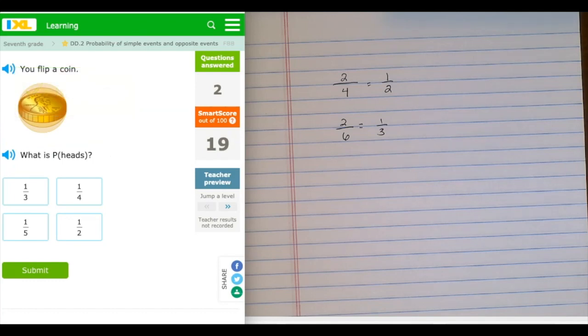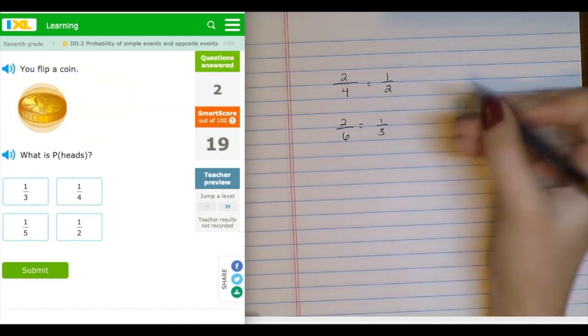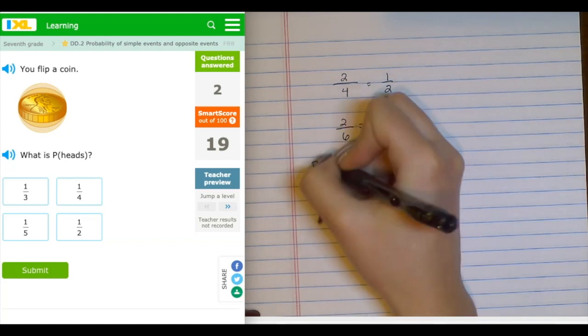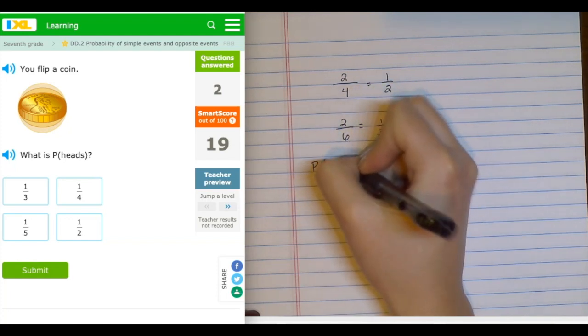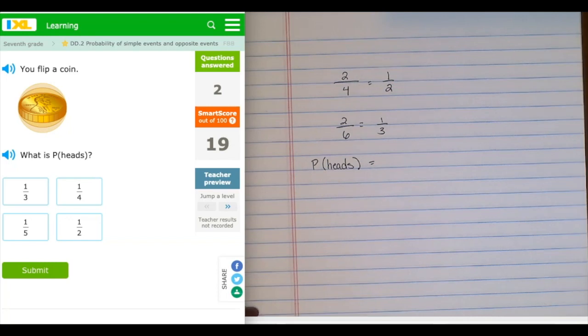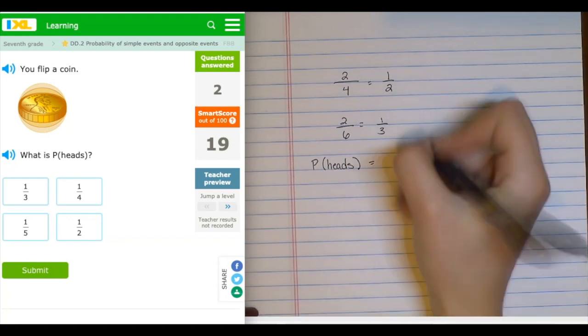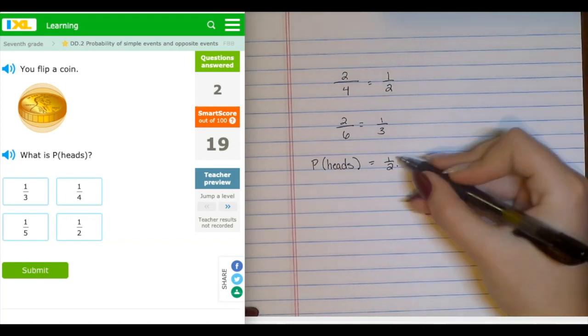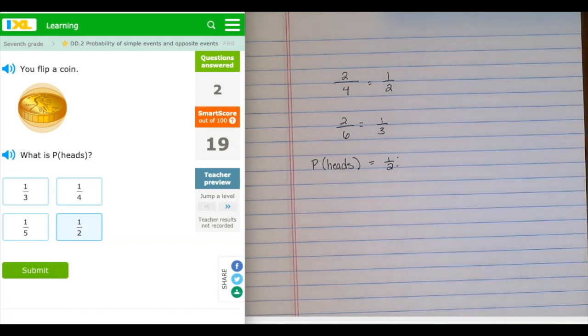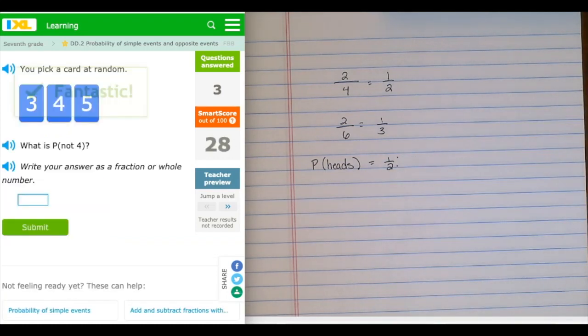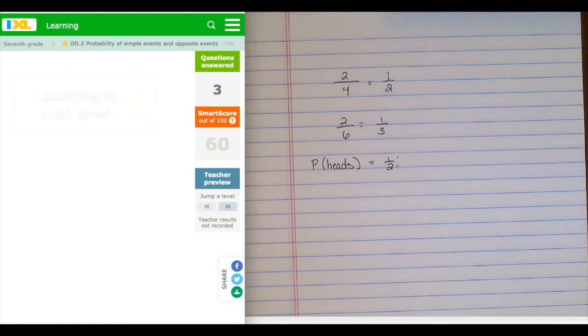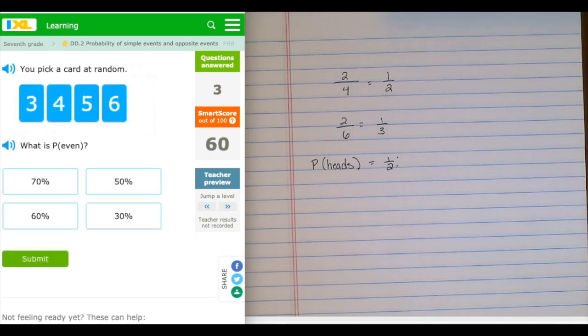What is the probability of landing on heads? So probability of heads of a coin, and this will always be the same probability for coin tosses. It's just 1 over 2, because there are two options, heads or tails, and one desired outcome landing on heads. Let's jump up a level, see if we can go to some that are a little bit more difficult.